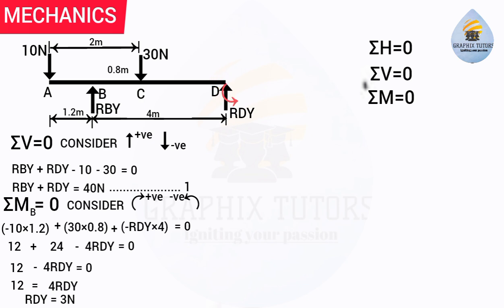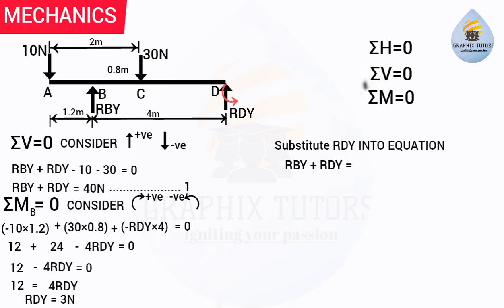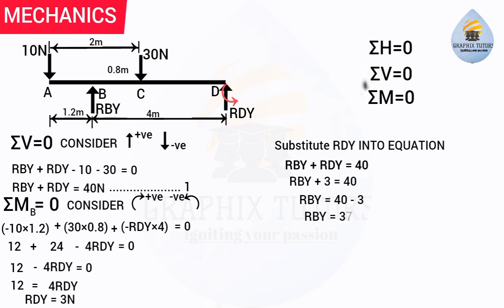Now substitute RDy = 3 N into Equation 1: RBy + RDy = 40 N, so RBy + 3 = 40, therefore RBy = 40 − 3 = 37 N. Converting to kilograms: 37 ÷ 9.81 ≈ 3.78 kg.